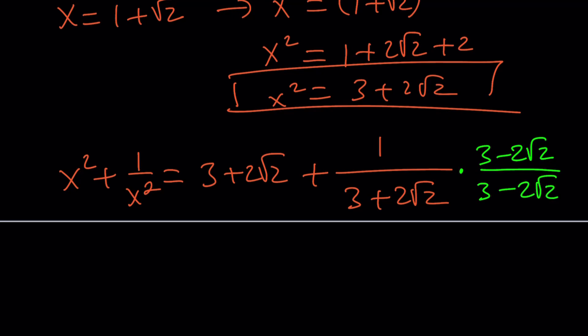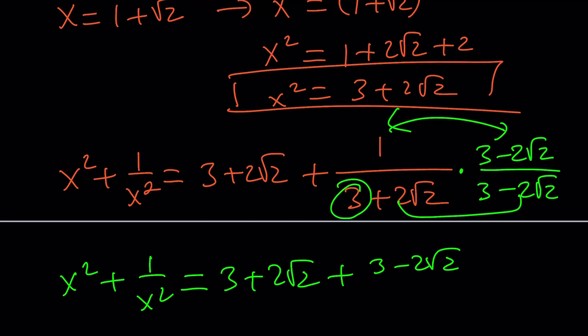When you multiply, you're going to notice the following. 3 plus 2 root 2 is going to stay. The product of these two things is going to be 3 minus 2 root 2, and the product of these two things is going to be 9 minus 8.